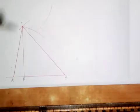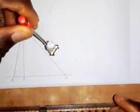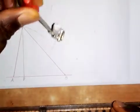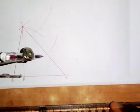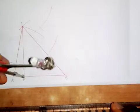Next, I bisect line CD. I place the compass point at C, extend to a convenient radius, and draw arcs above and below. Then placing the compass at D, I draw corresponding arcs. I join the points of intersection to complete the bisector of CD.